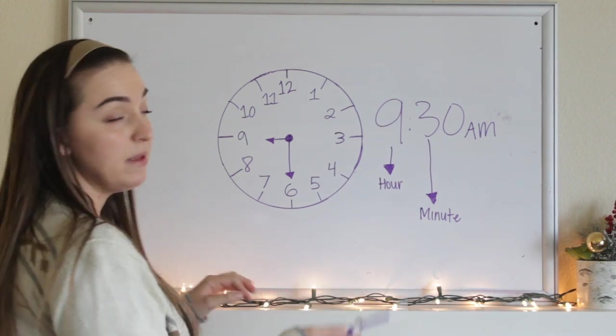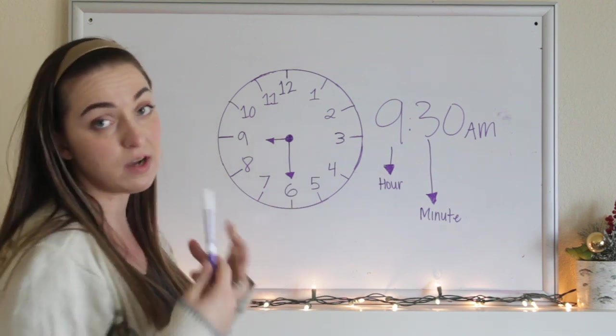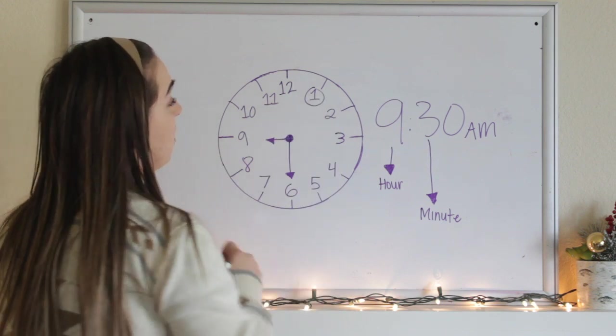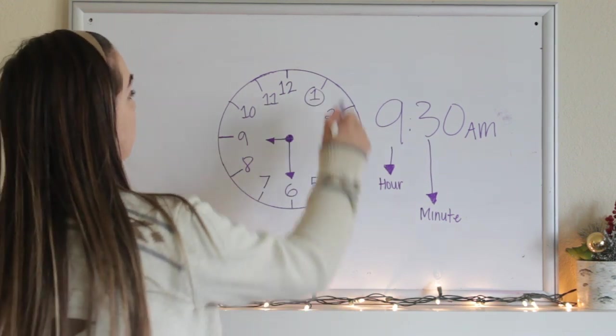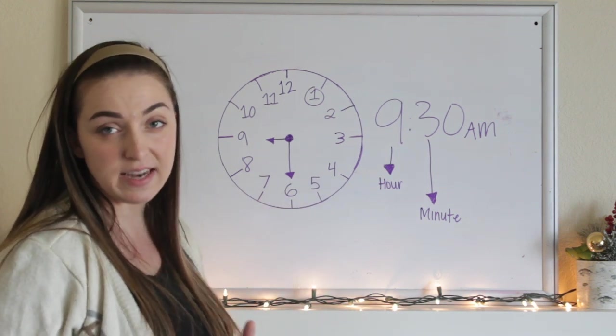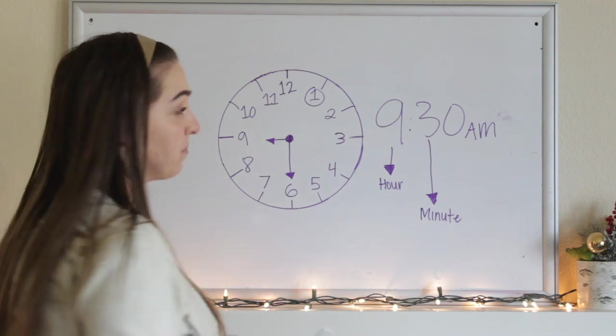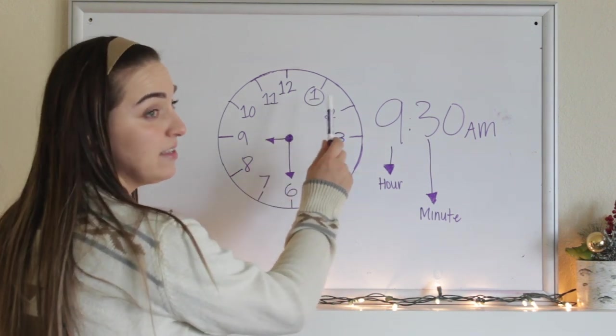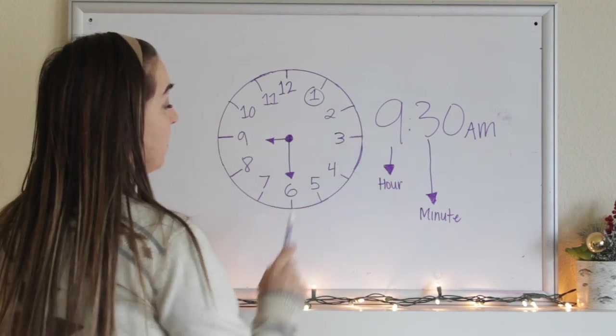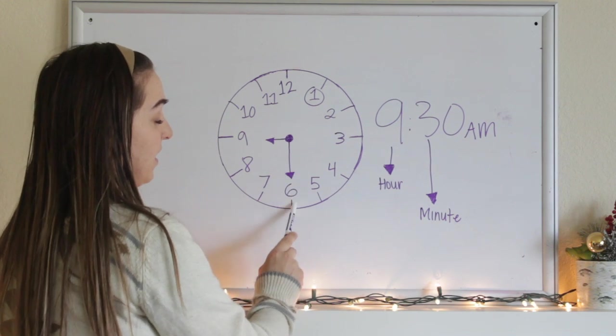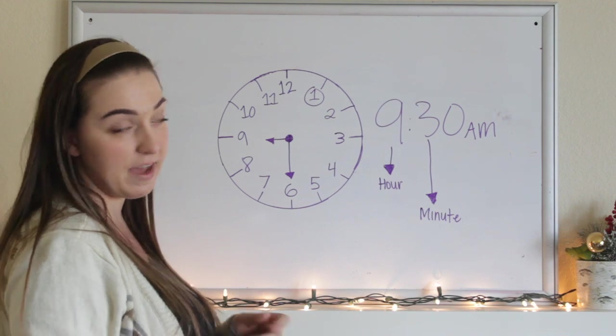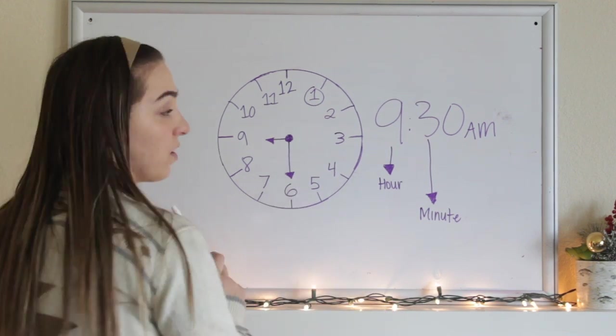So when I count minutes, minutes are always after these two dots right here when we're talking about time. When we count minutes, we always start from the 1. And we don't count like this 1, 2, 3, 4, 5, 6. We actually count by 5s instead. So go ahead and skip count by 5s with me. Starting at the 1. Ready, set, go. 5, 10, 15, 20, 25, 30. And that's where I want to put my long hand on the 6 because I know that it counts up to 30 when I'm counting by 5s. So that's how we're going to write out 9:30 on our clock.